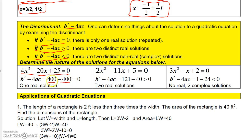You can quickly determine the type of solutions by evaluating the discriminant. For the first example: negative 20 squared is 400, minus 4 times 4 times 25 is minus 400, giving a discriminant of 0 — one real solution. For the second: b squared minus 4ac equals 121 minus 40, which is 81 — two real solutions. For the third: negative 1 squared minus 4 times 3 times 2 gives 1 minus 24, which is negative 23 — two complex solutions, no real solutions. The next video covers applications of quadratic equations.